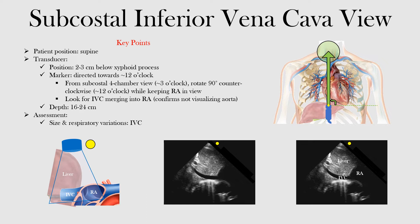Notice that here's our transducer, shown in blue, and in the front you have the marker, shown in yellow. Previously in the subcostal four-chamber view, we had the marker directed toward three o'clock. Now we want to go counterclockwise from this position — you can see that arrow — going toward 12 o'clock.